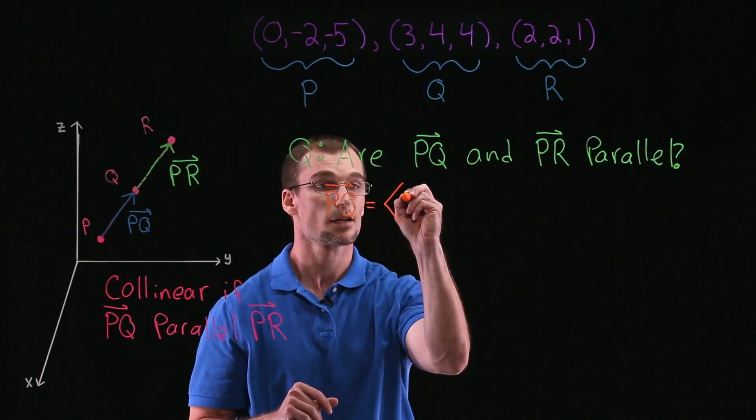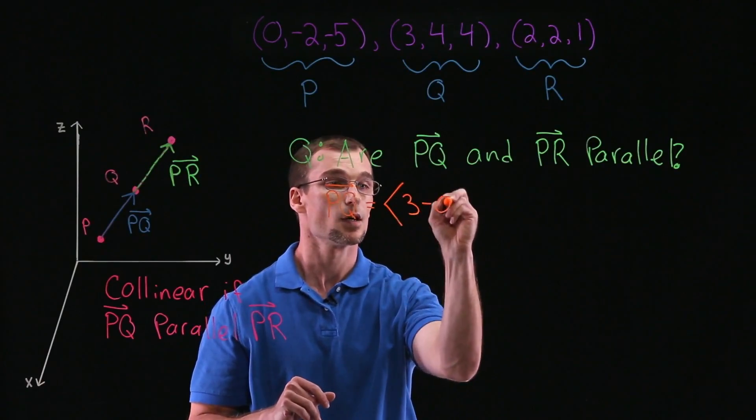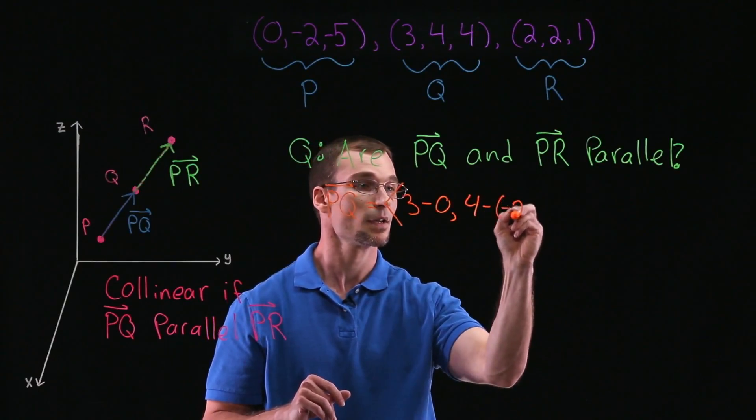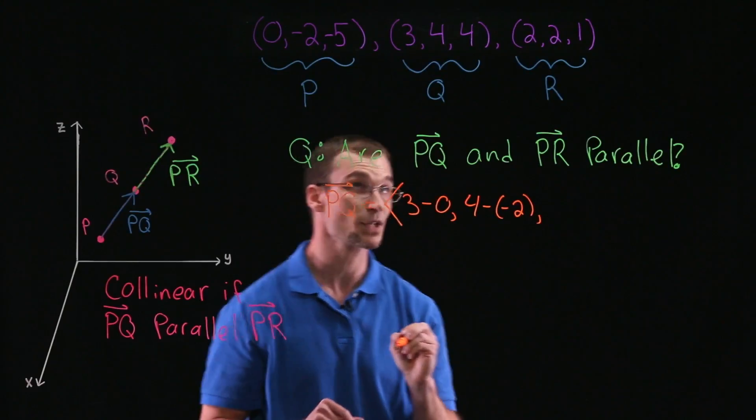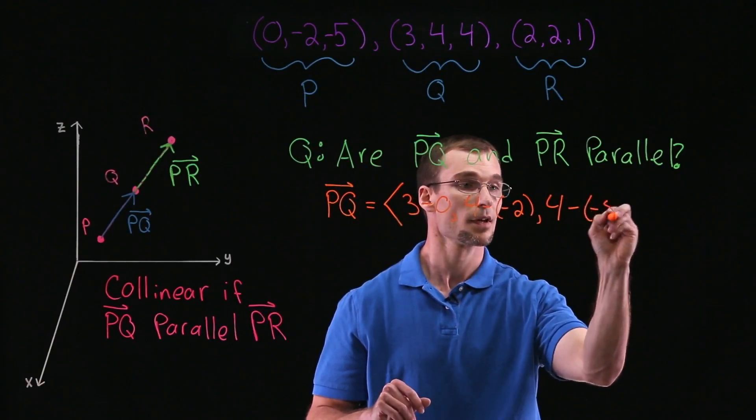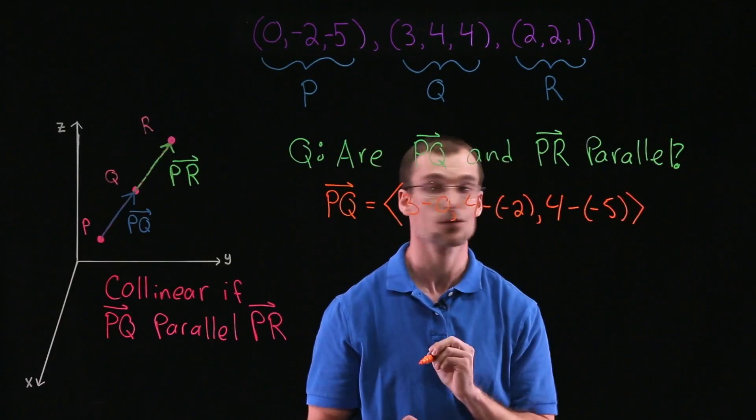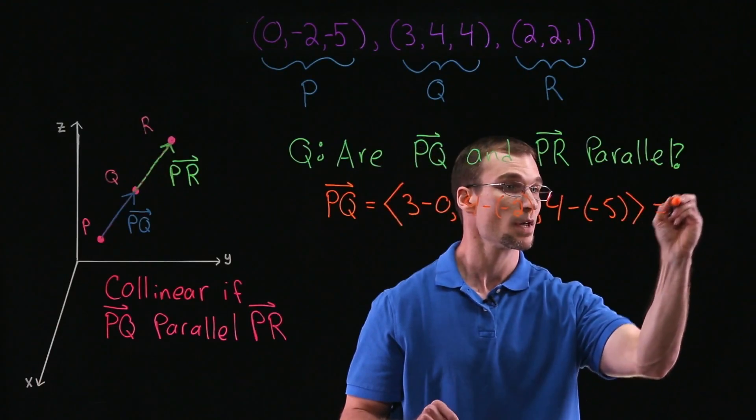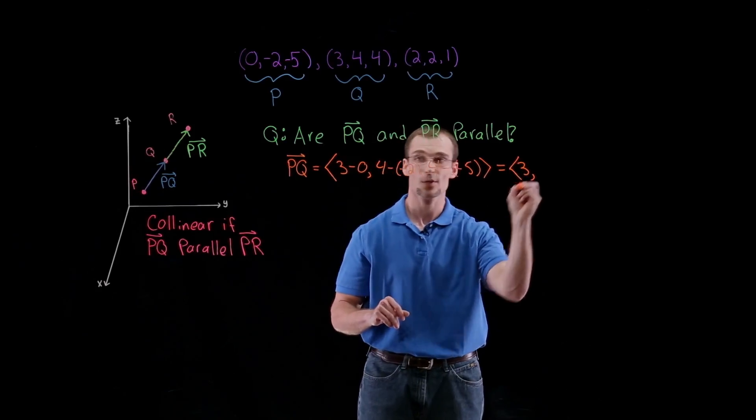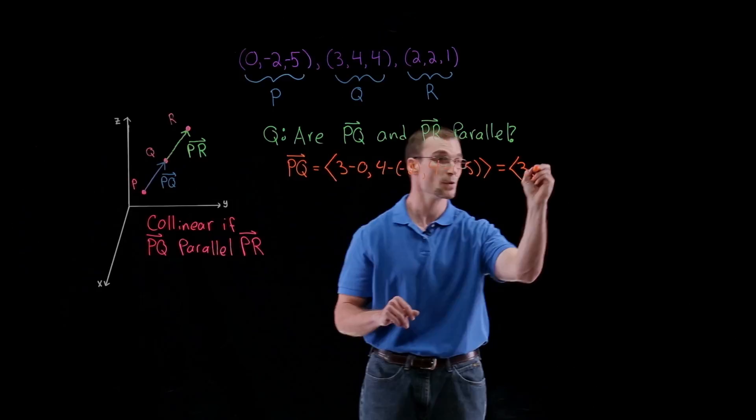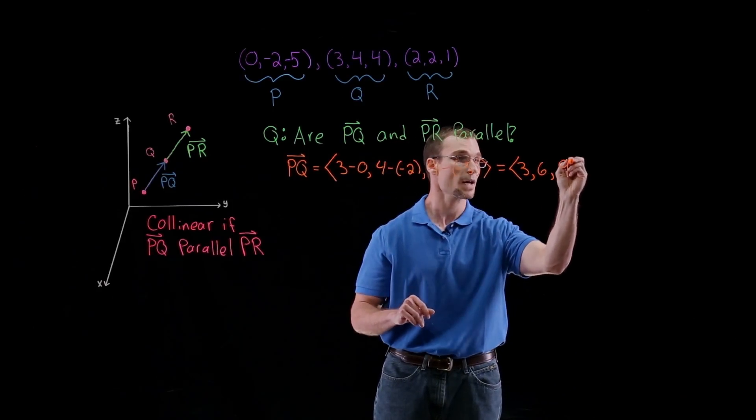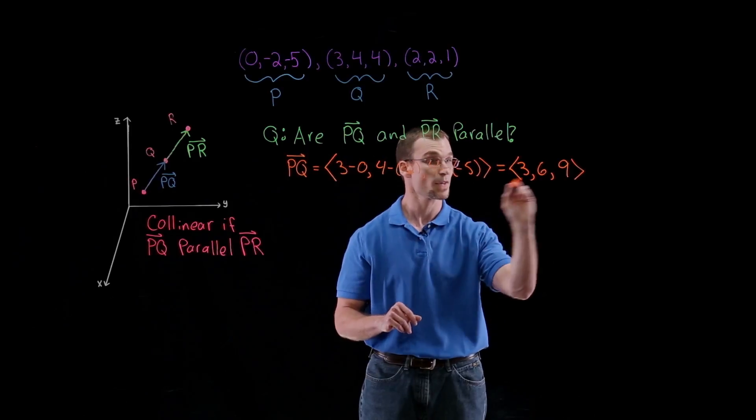So we're going to have 3 minus 0 as our first component, 4 minus negative 2 as our second component, and 4 minus negative 5 as our third component. So that's going to give us this vector in component form. 3 minus 0 is 3, 4 plus 2 is 6, and 4 plus 5 is 9. So that's our vector.